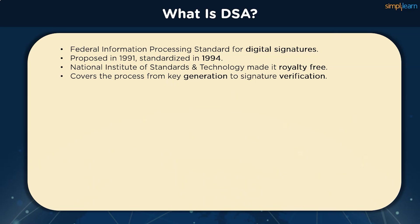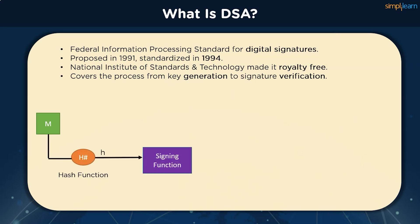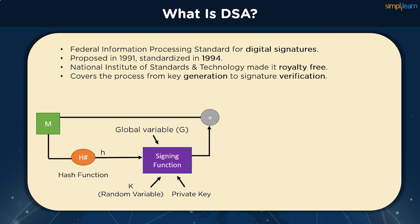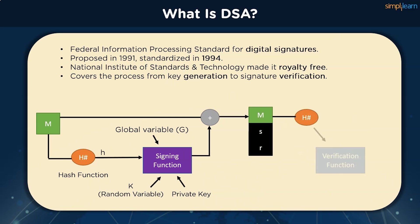In the image, we can see the entire process of DSA validation. A plaintext message is passed on to a hash function where the digest is generated, which is passed on to a signing function. The signing function also has other parameters like a global variable G, a random variable K, and the private key of the sender. The outputs are then bundled into a single pack with the plaintext and sent to the receiver. The two outputs from the signing functions are the two 160-bit numbers denoted by S and R. On the receiver end, we pass the plaintext through the same hash function to regenerate the message digest. It is passed on to a verification function which requires the public key of the sender, global variable G, and S and R received from the sender.